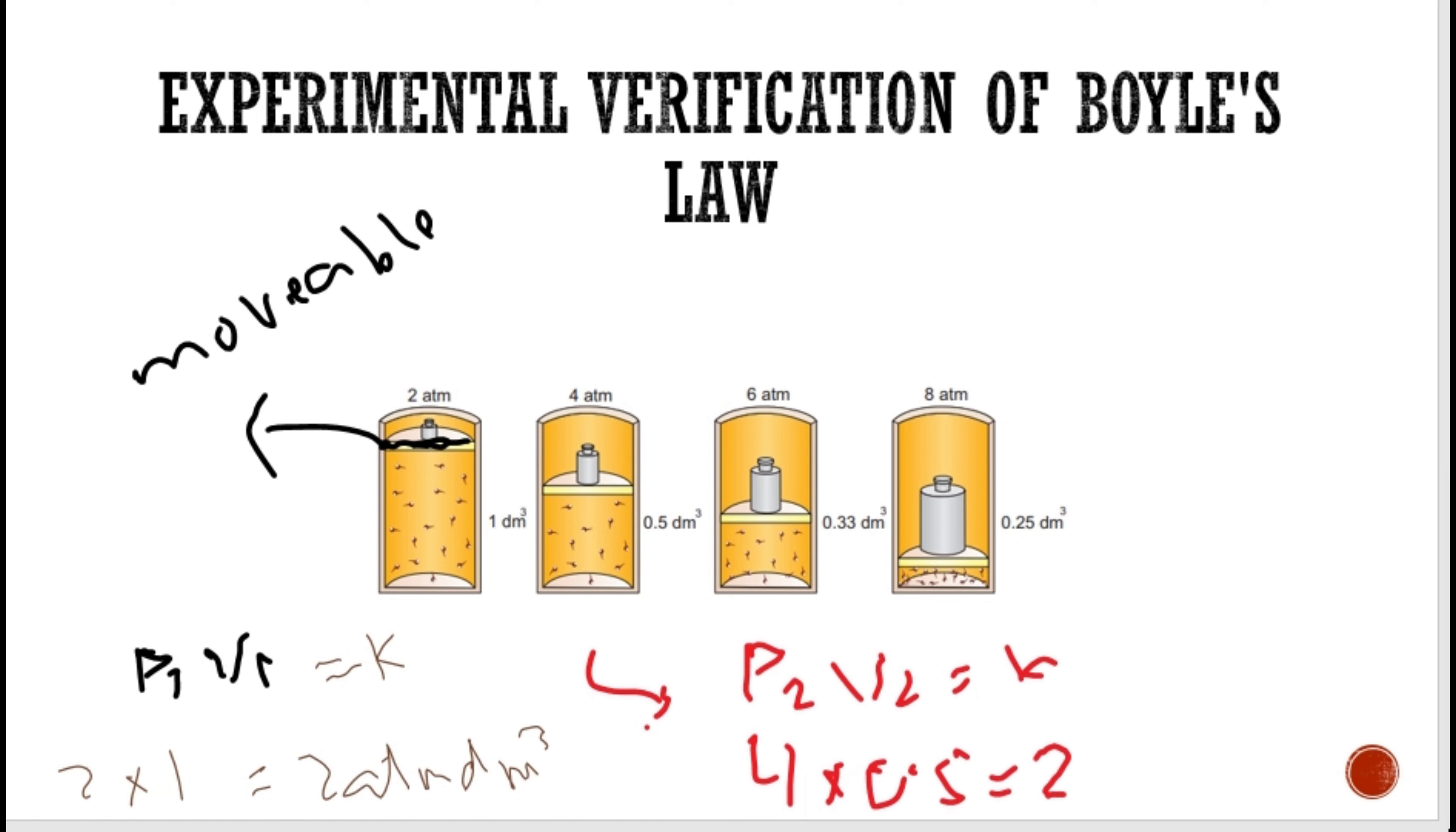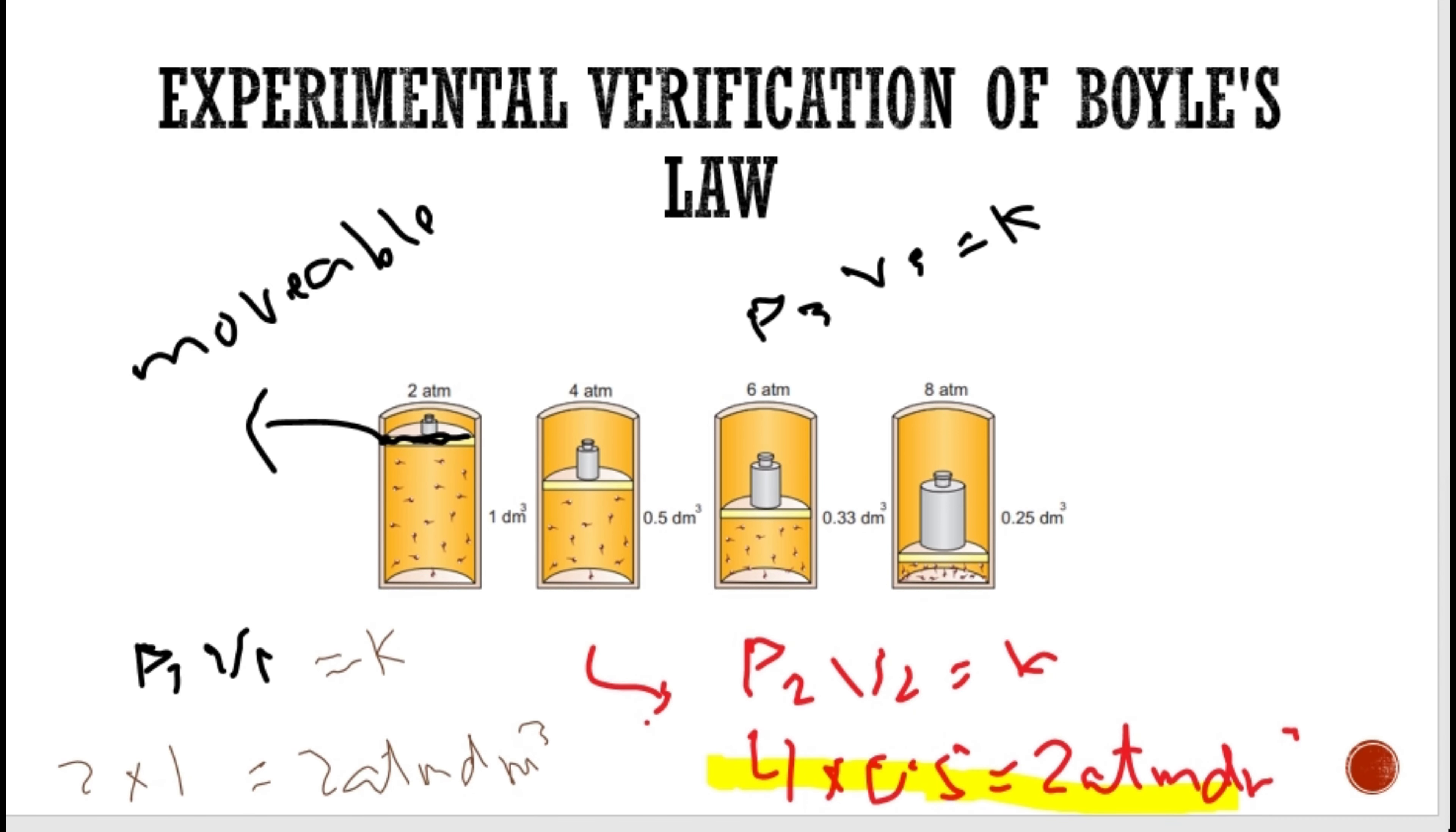If you increase pressure to 6 atm, then volume reduces 3 times to 0.33 decimeter cube. In the third experiment, 6 multiply by 0.33 also gives 2 atm decimeter cube. In the 4th experiment, if we increase pressure 4 times to 8 atm, volume will be 0.25 decimeter cube.